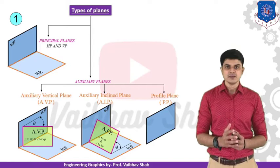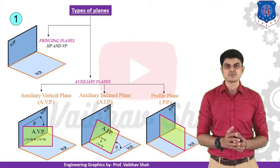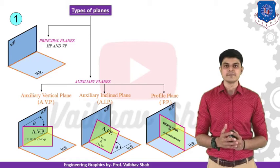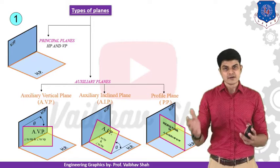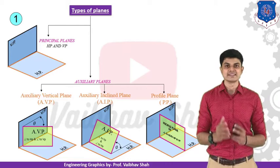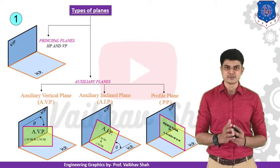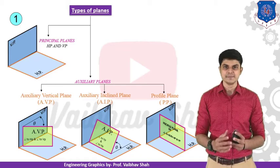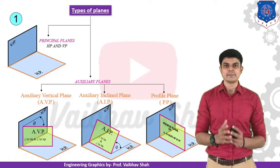Now let us take the final and very important plane — the profile plane. This is a special case of your auxiliary plane, mostly used to take the side views. The profile plane is a special case or combination of the auxiliary vertical plane and auxiliary inclined plane. The plane is perpendicular to both HP and VP. So the plane which is perpendicular to both the horizontal plane and the vertical plane is the profile plane. Remember, our side view always comes onto the profile plane.